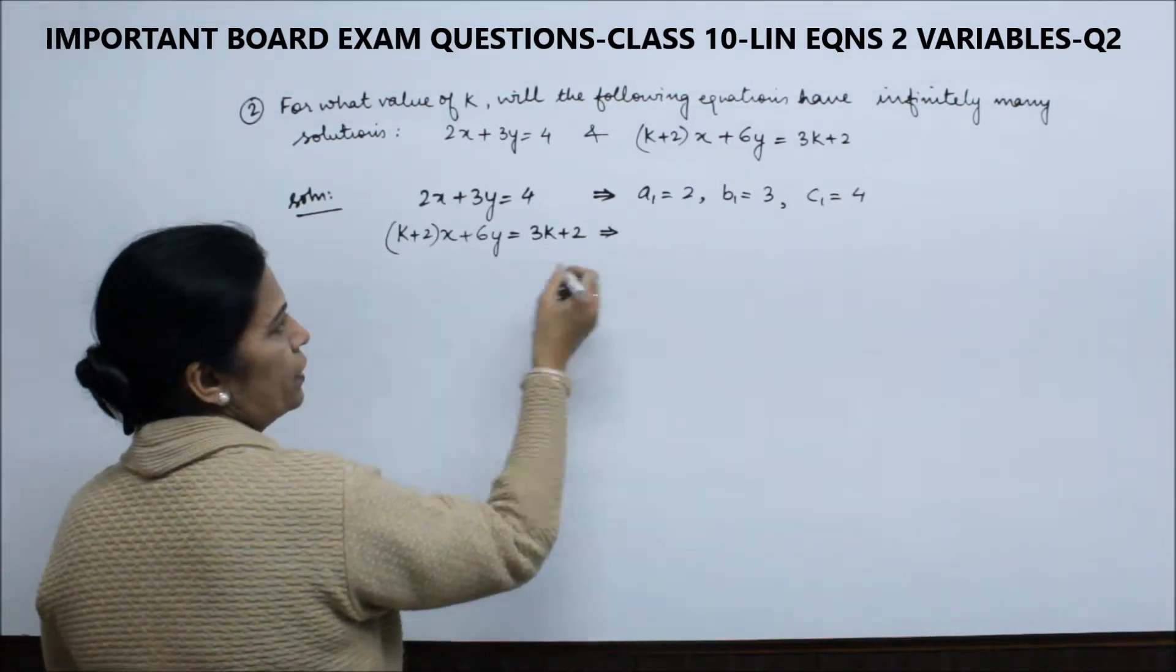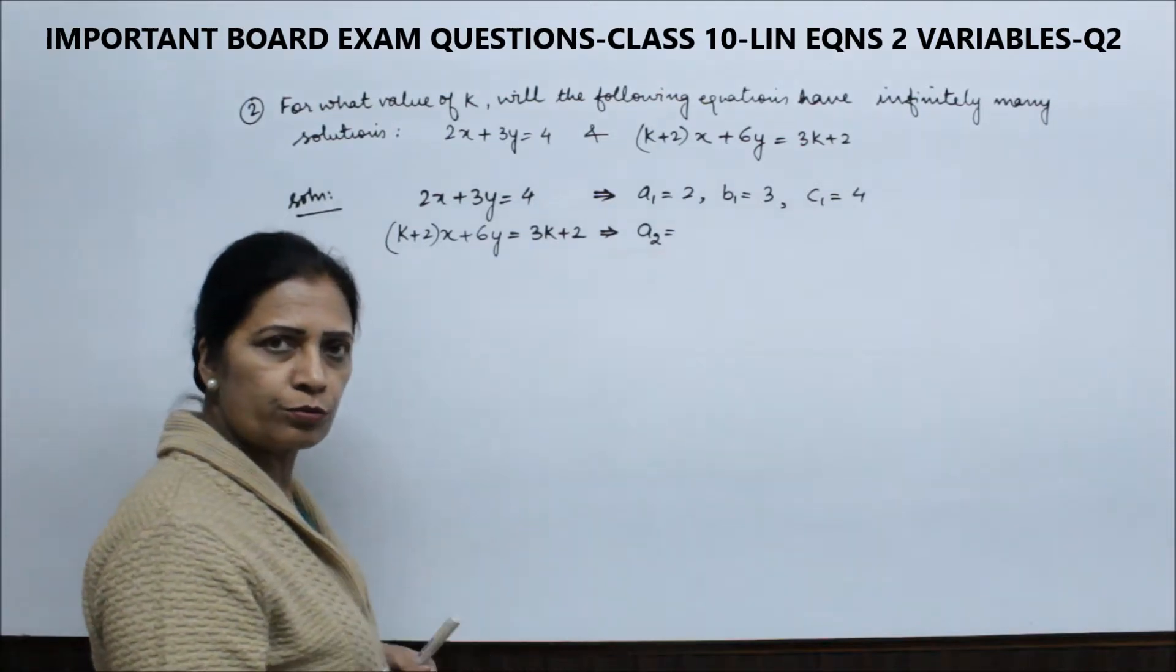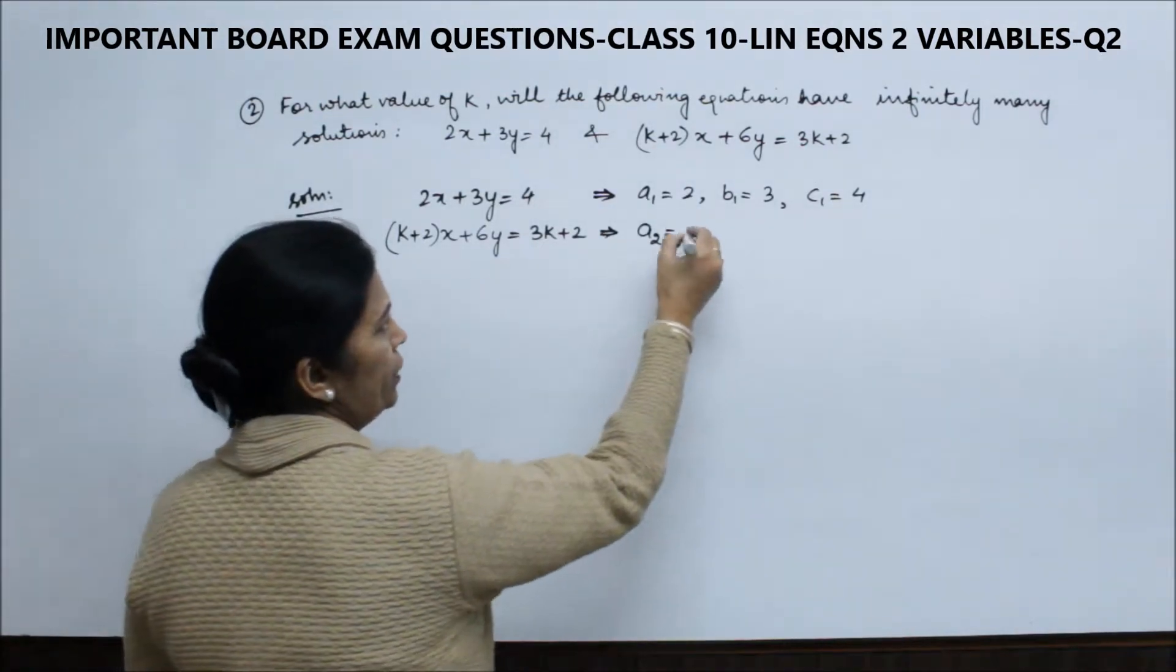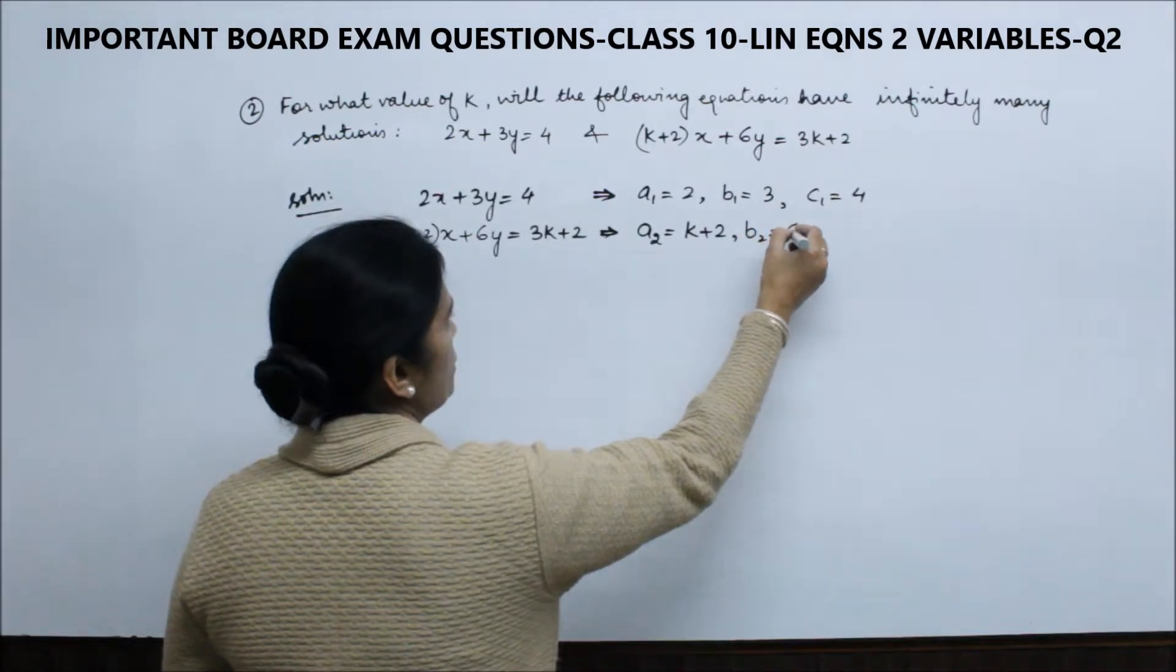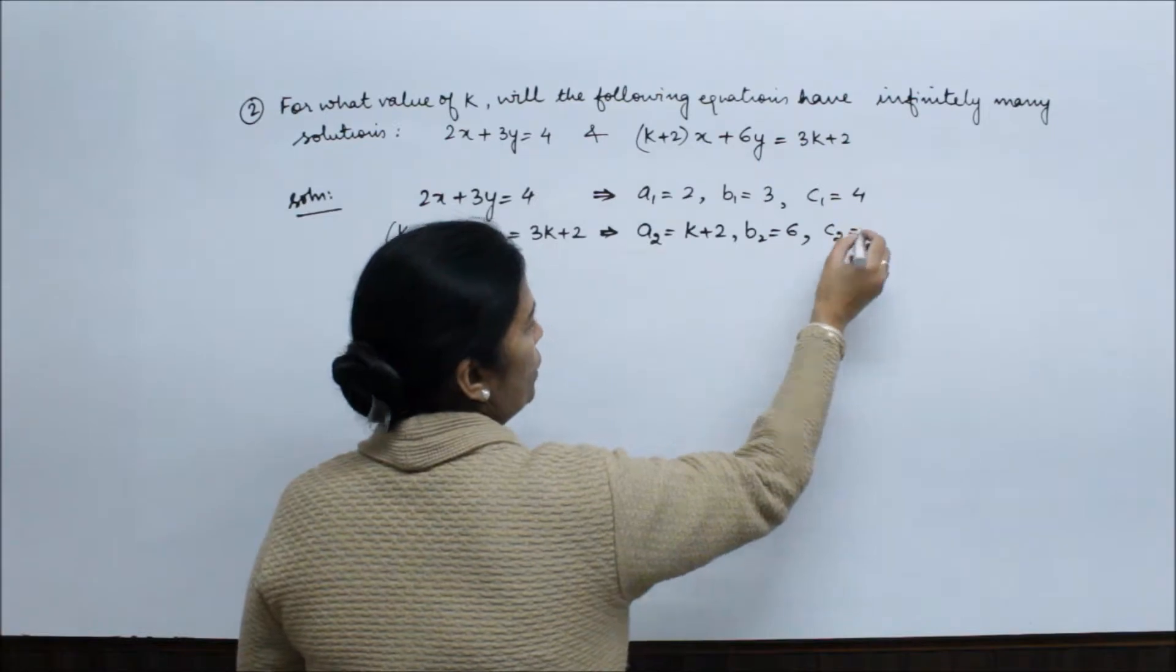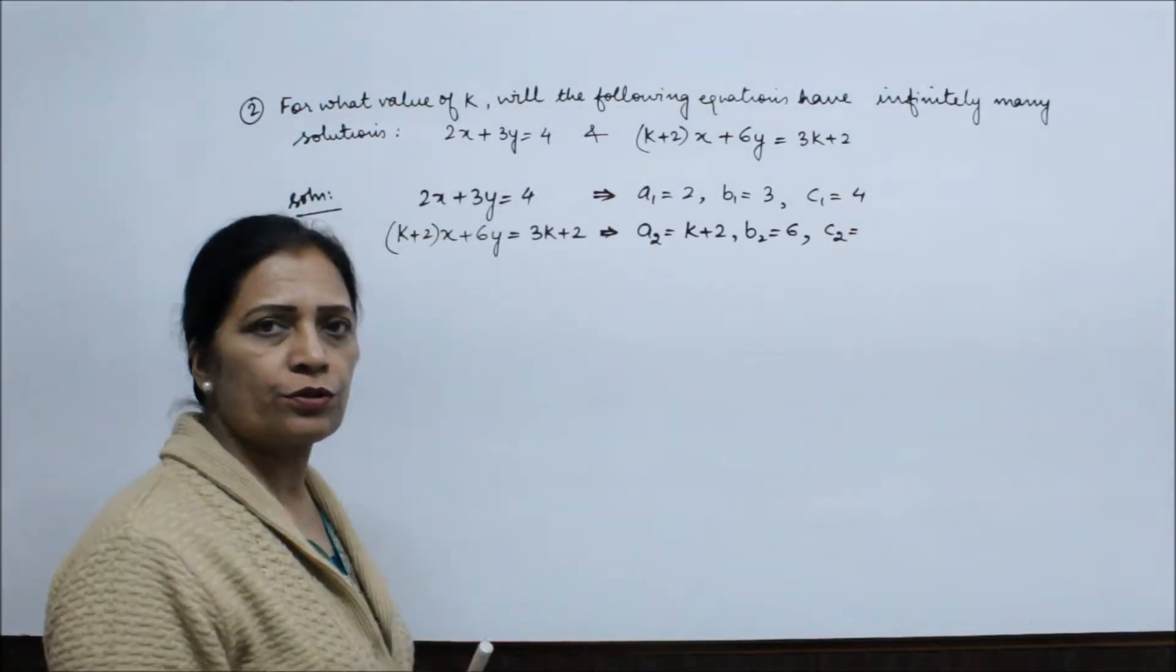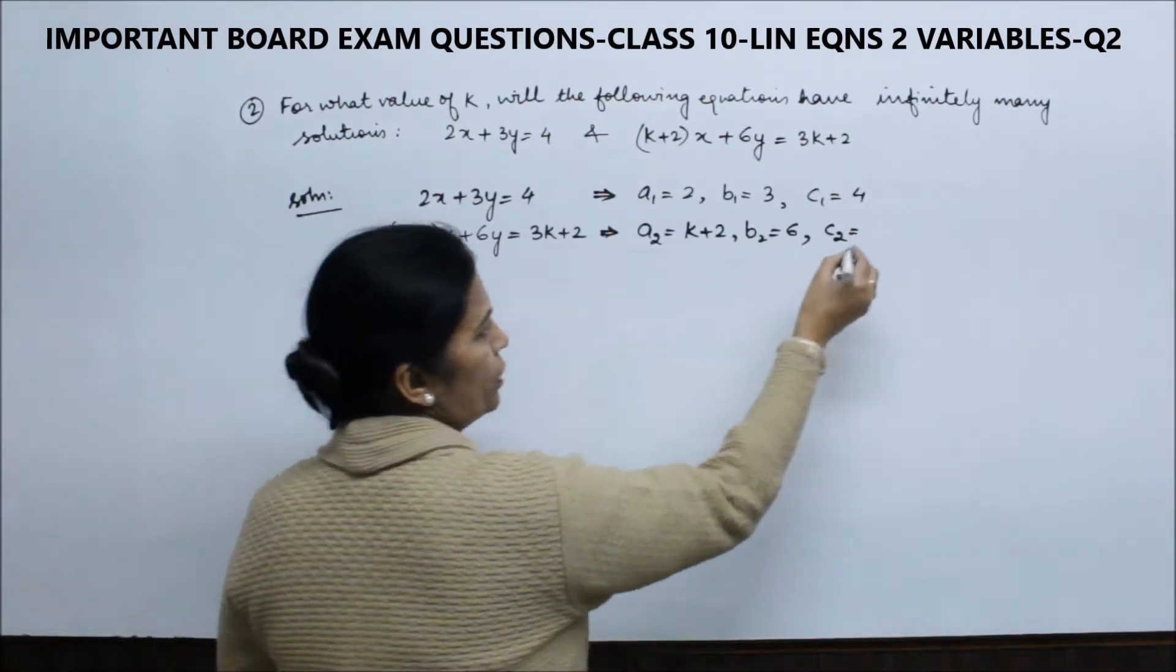From the second equation, we identify a2, b2, and c2. So a2 is k+2, b2 is 6. If there's any minus sign, you need to include that too. And c2 is the term without x or y, which is our constant. So c2 is 3k + 2.